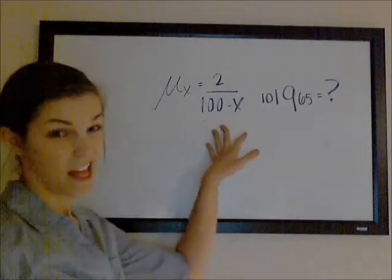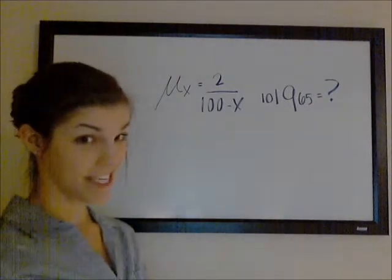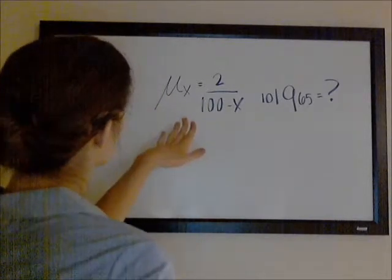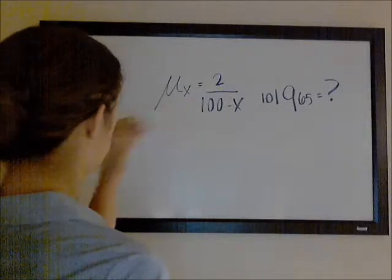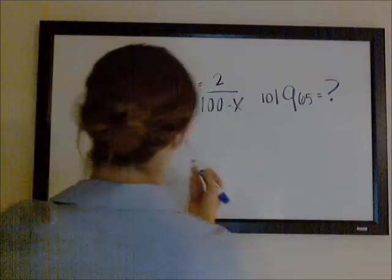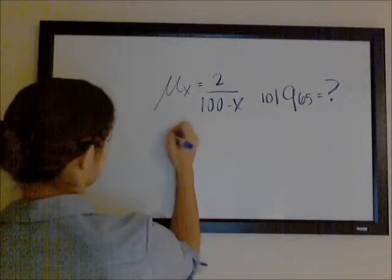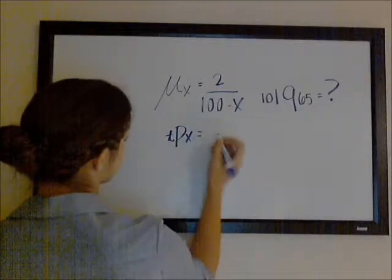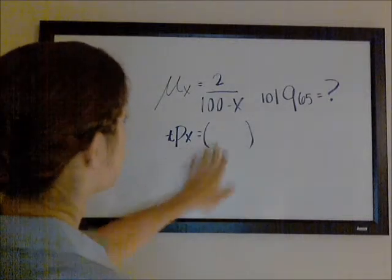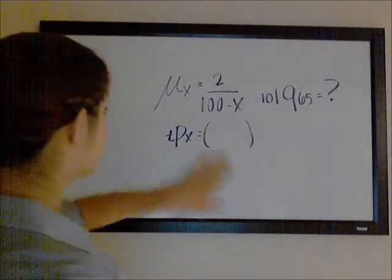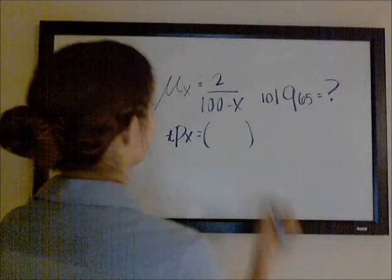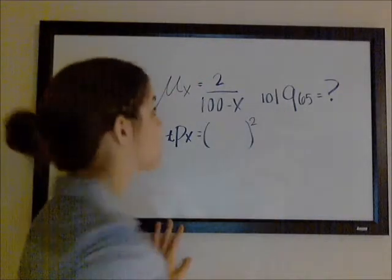Okay, so this is almost de Moivre, but really, in a way, not quite. So what you can actually do is that if you multiply the force of mortality that would otherwise be de Moivre by a constant, you can actually raise the survival probabilities. The survival probability would be what it would be if it was distributed according to de Moivre without this constant, and then raised to that power.